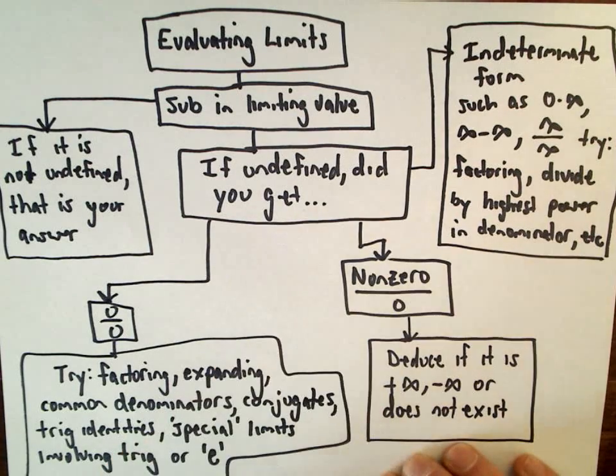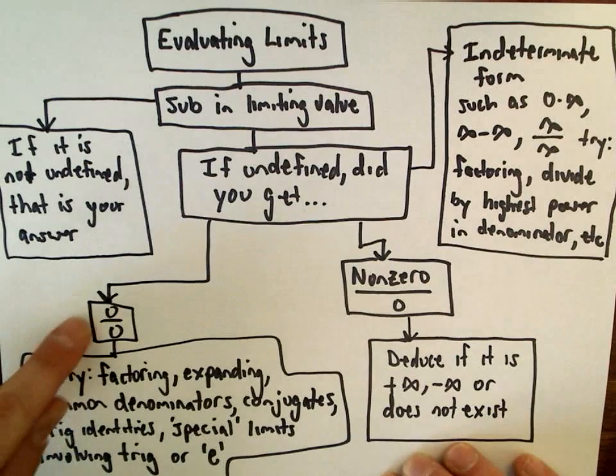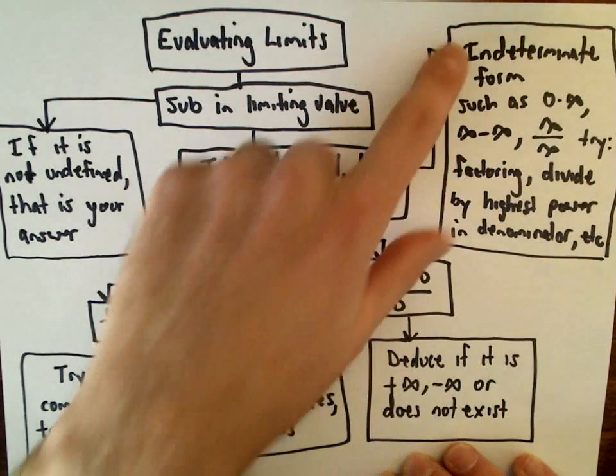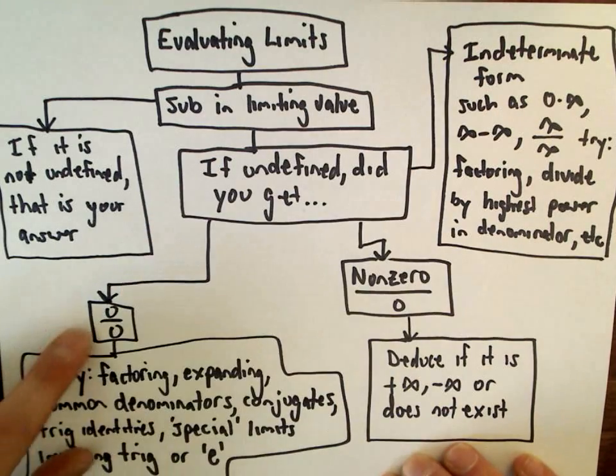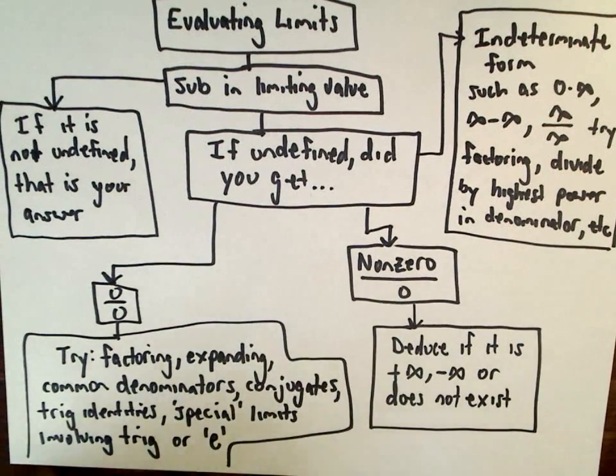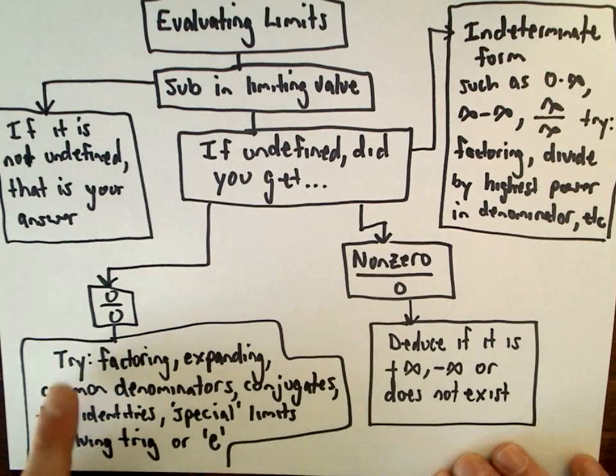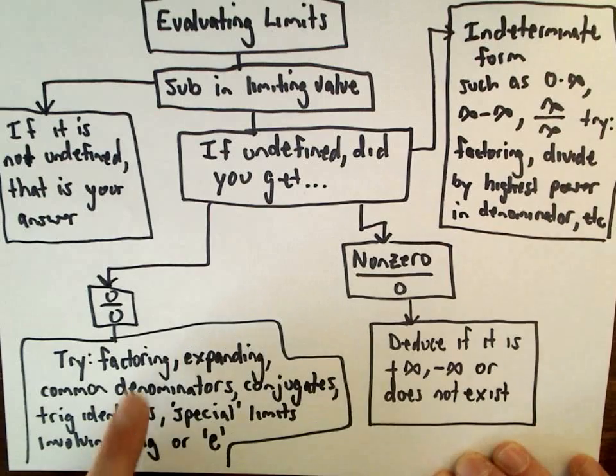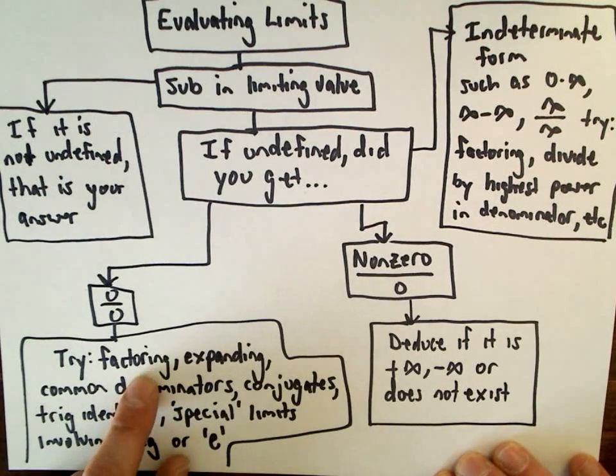If it's undefined, you sort of get some different things. So you may get 0 over 0, it may be something non-0 over 0, it may be an indeterminate form. 0 over 0 is also considered an indeterminate form, but a lot of times if you get 0 over 0, some algebra techniques will help you find a solution.